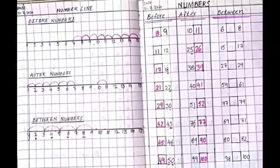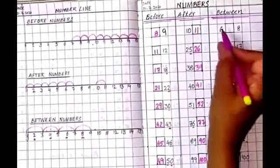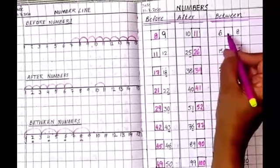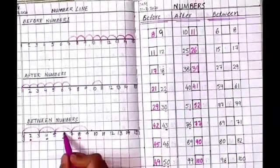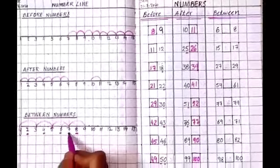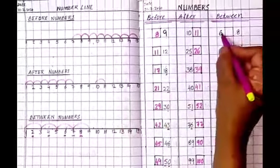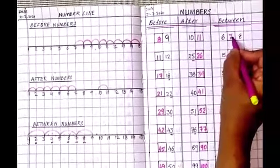Is this easy for you? Yes. Now here, between. So the middle number you have to write. 6 and 8. From 6 and 8, what is the middle number? 7. So between 6 and 8, 7 is your middle number.